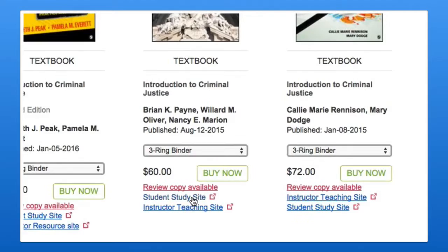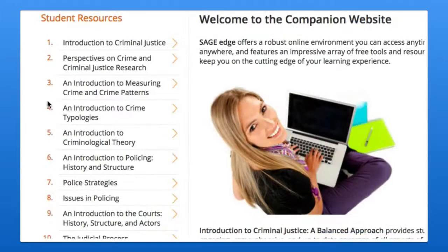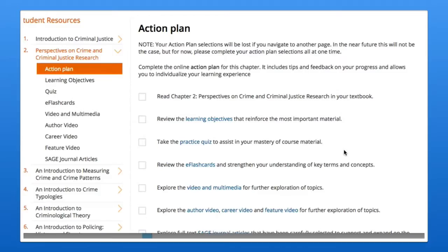Just like Sage's instructor resources, student learning and assessment tools — which you can access by using the top navigation menu — will vary by textbook. To preview a student resource, first choose the desired chapter from the left-hand navigation menu, and then select a learning or assessment element from the sub-menu.